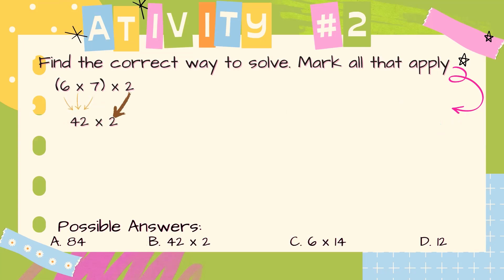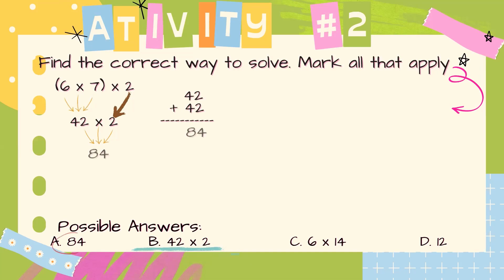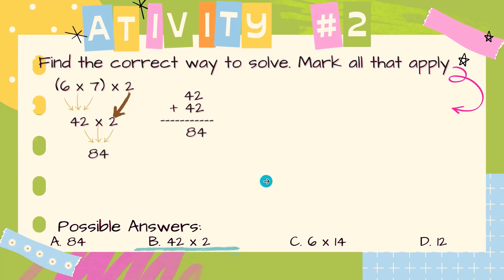We have to continue working. Now we multiply 42 times 2 to find the final answer. To multiply 42 times 2, we can use repeated addition: 42 plus 42, and that's equal to 84. Here we have another answer: 84. Answer A and answer B.